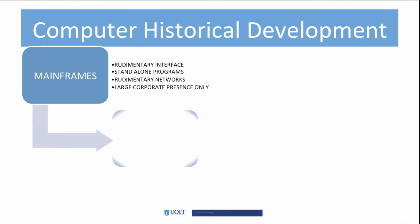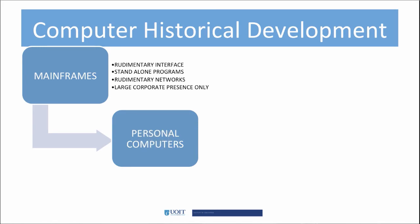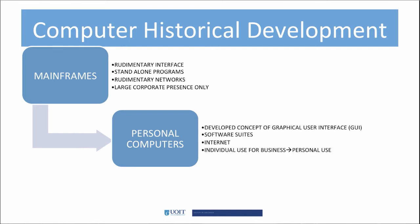The next era is personal computers. This era progressed from command line interface to current graphical user interfaces, or GUIs. We have software suites such as WordPerfect Office, Microsoft Office, and OpenOffice. Although originally developed to link mainframes, the World Wide Web and the Internet evolved and expanded to connect millions of PCs. These computers were for individual use both in businesses and for personal use.